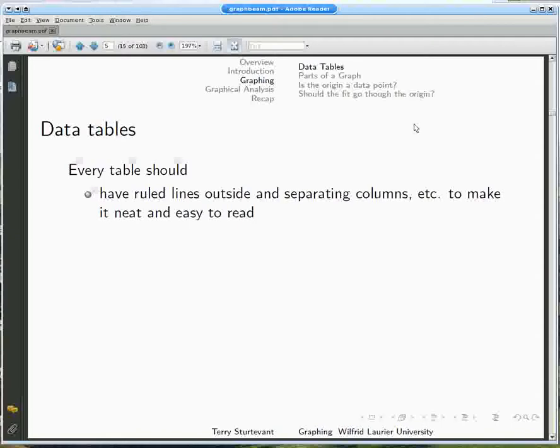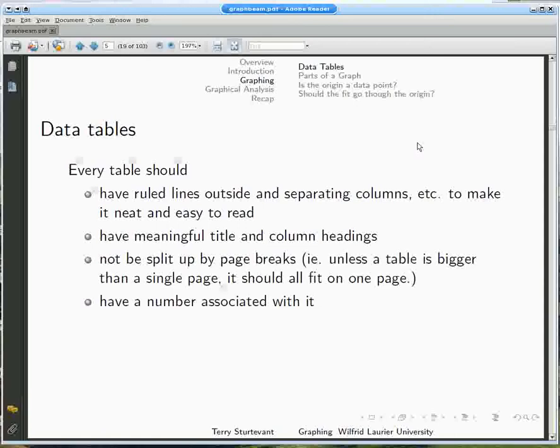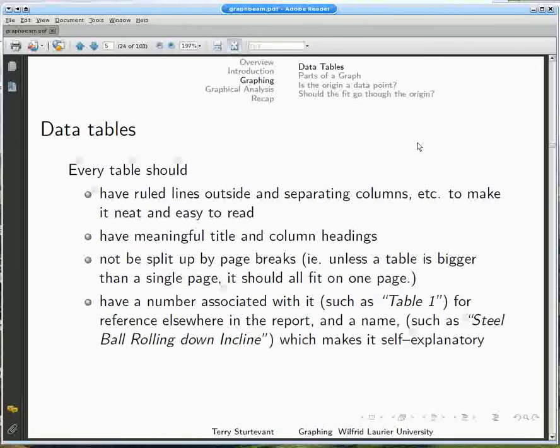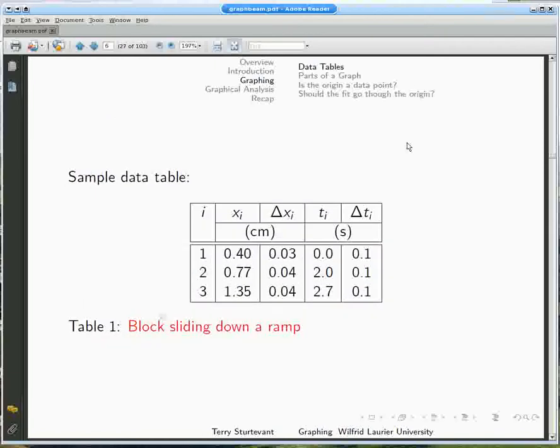Data tables should be well laid out, easy to understand and complete. A table needs a number and a name, and columns for the variables with their uncertainties and their units.